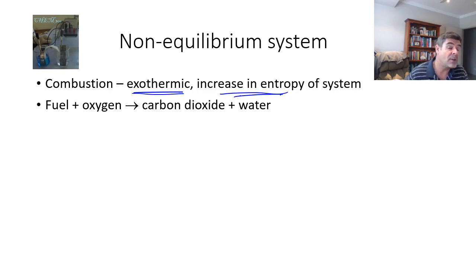The general equation for a combustion reaction is some fuel source plus oxygen gives us carbon dioxide and water. We're going to start to change the types of arrows that we use based on whether we are looking at a non-equilibrium system or an equilibrium system. Because combustion is a non-equilibrium system, we don't use the double-sided arrow, we just use a single-sided arrow.